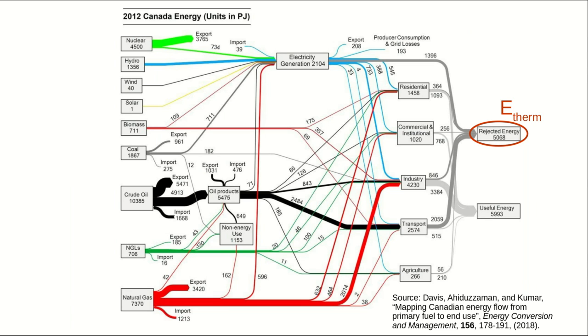That's the thermal energy from all those irreversible processes where energy is converted from one form to another. Note that a lot of the useful energy is thermal energy as well, for example the heating of your home, and in the end after it's served its purpose all of the other things like the electric potential energy running your computer and the light energy from your light bulbs is all ultimately converted to thermal energy as well.